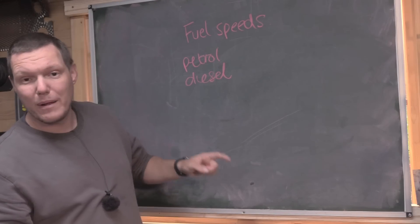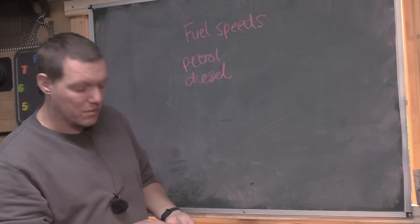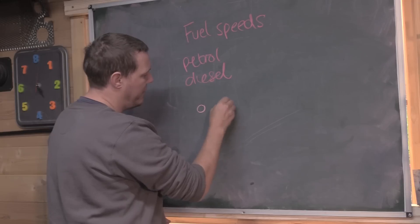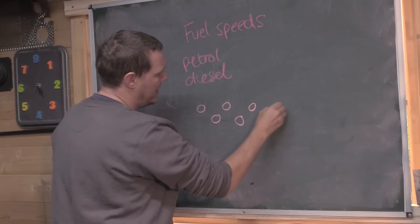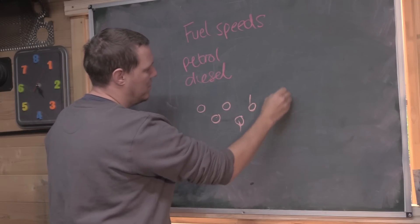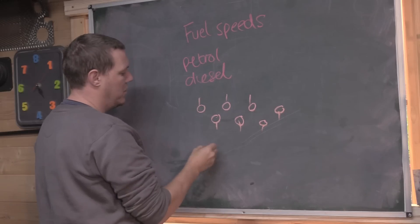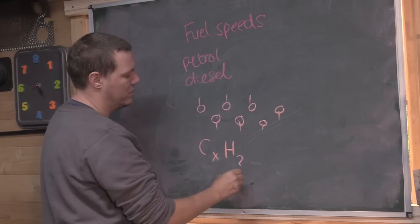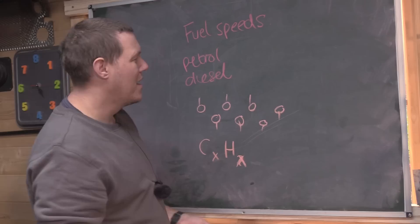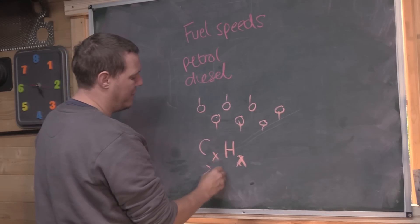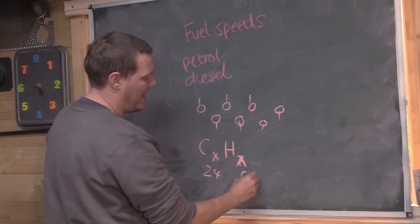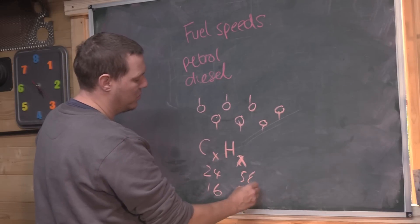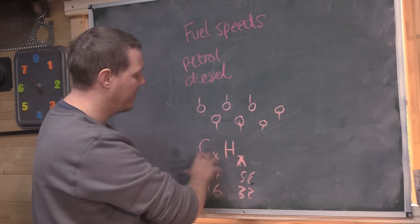We'll very quickly talk about trying to determine the difference between the two. What's happening is that you have this long chain molecule of carbons and hydrogens. It can be 24 and 58 or 16 and 32 and all sorts of stuff, different variations.